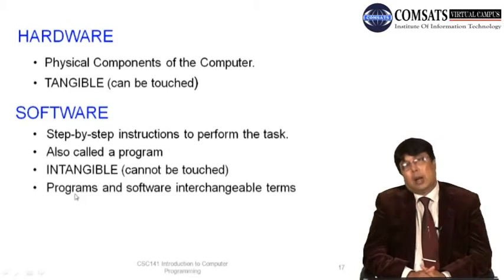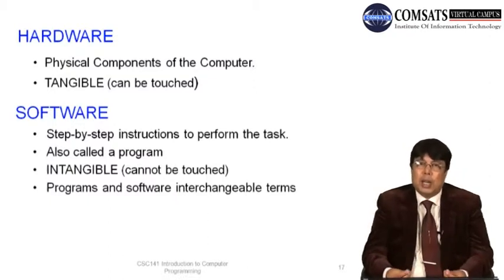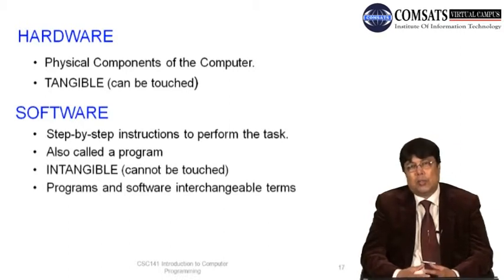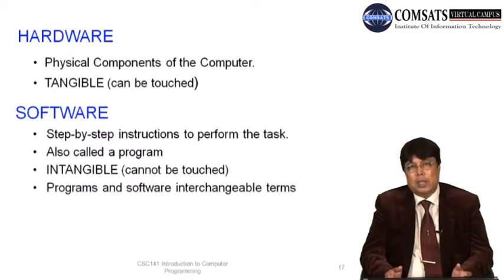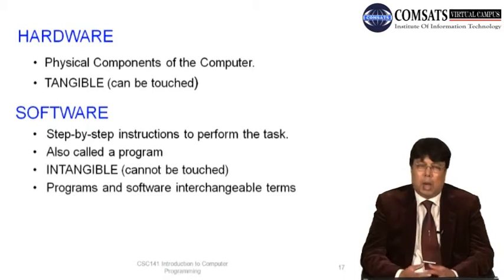Hardware refers to the physical components of a computer — things that are tangible, meaning you can touch and feel them. Examples include the screen, the system box (which people sometimes call the CPU), the keyboard, and the mouse. These physical components constitute the hardware of the computer.